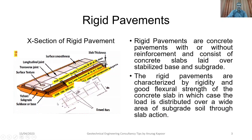Regarding the cross section of rigid pavement: a granular sub-base of desired thickness is laid over well-compacted subgrade, over and above which a dry lean concrete of a specified grade is laid. Further above the dry lean concrete, a PQC — known as Pavement Quality Concrete — of desired grade at 28 days is laid upon, which constitutes the slab thickness.